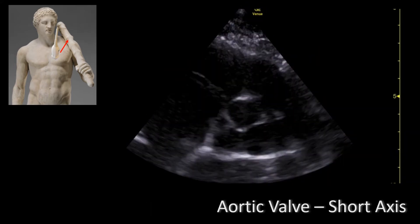Here's the aortic valve in a magnified view. There are two ways you can get this image: you can either zoom into the aortic valve from the image you had earlier, or you can decrease the depth. In this particular case the examiner decided to decrease the depth to 10 centimeters. The aortic valve in short axis is commonly described as the Mercedes-Benz sign, which I'm going to outline right now.